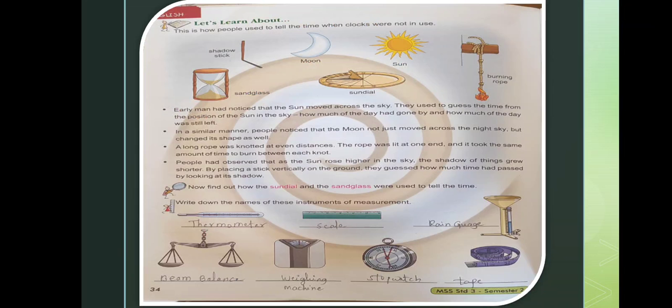Next. In a similar manner, people noticed that the moon not just moved across the night sky but changed its shape as well. It's clear. So by the moon also they had identified. A long rope was knotted at even distances. The rope was lit at one end and it took the same amount of time to burn between each knot. By burning rope also they identified the time. Next.